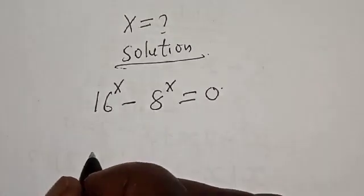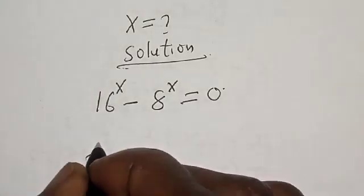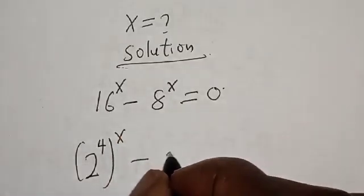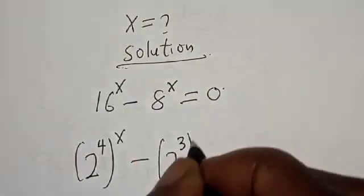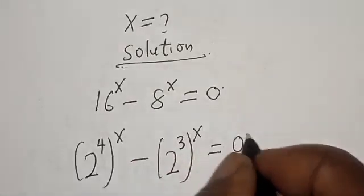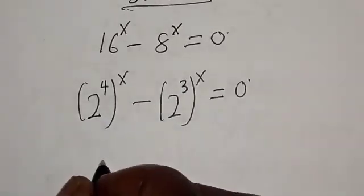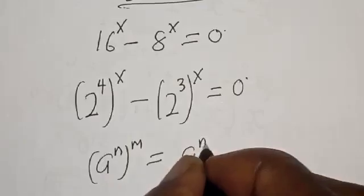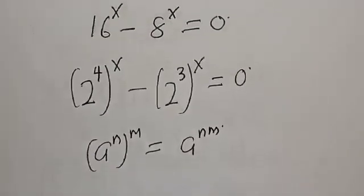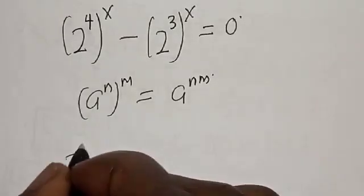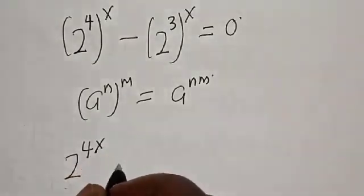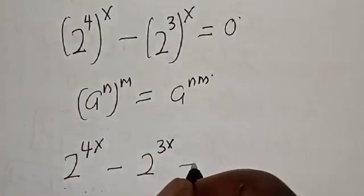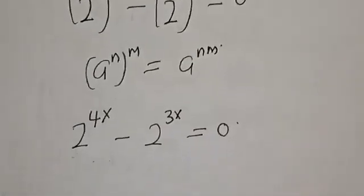Then 16 raised to power x is the same thing as 2 raised to power 4, raised to power x. And 8 raised to power x is 2 raised to power 3, raised to power x. Remember, if you have a base raised to power m raised to power n, that is the same as the base raised to power m times n. So we have 2 raised to power 4x minus 2 raised to power 3x is equal to 0.